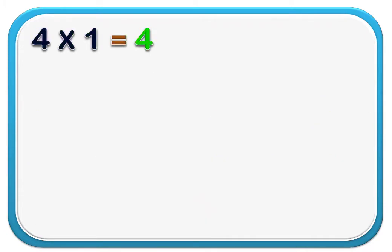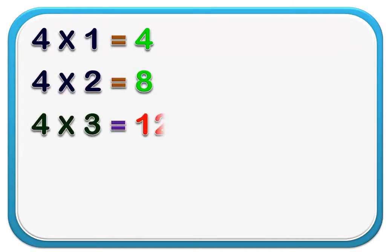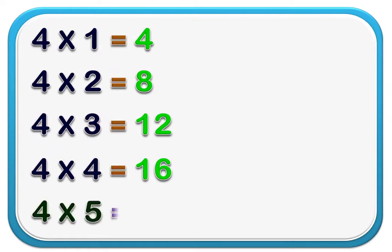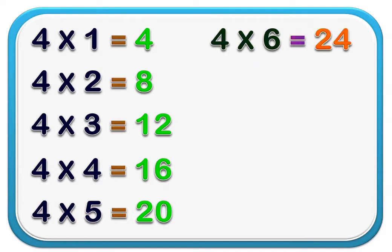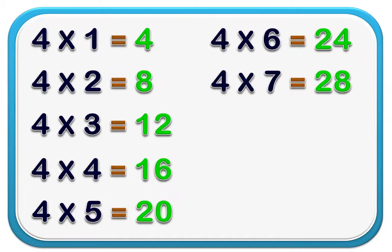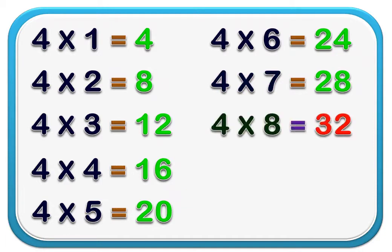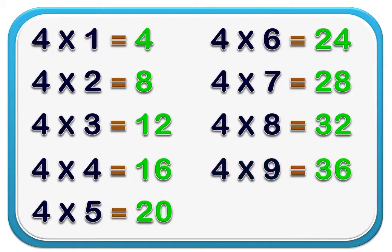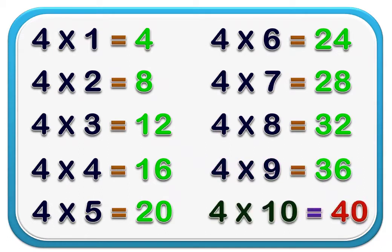4 1's are 4. 4 2's are 8. 4 3's are 12. 4 4's are 16. 4 5's are 20. 4 6's are 24. 4 7's are 28. 4 8's are 32. 4 9's are 36. 4 10's are 40.